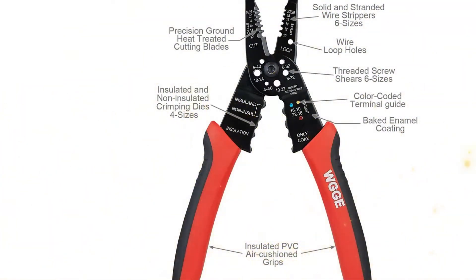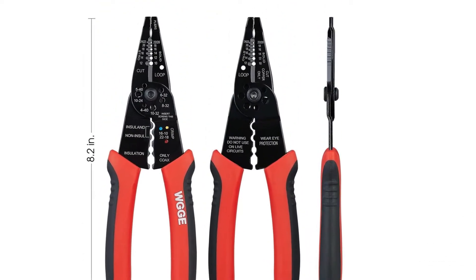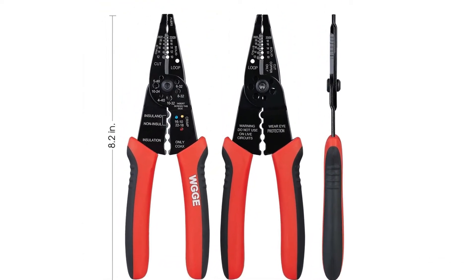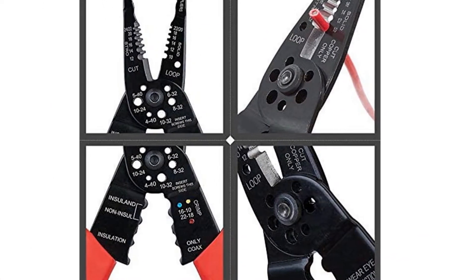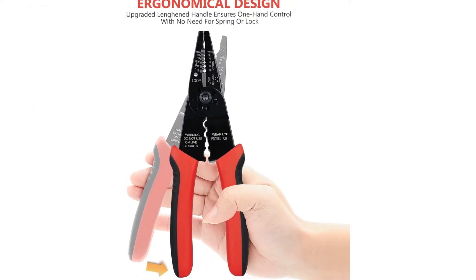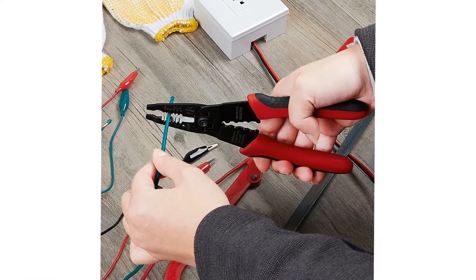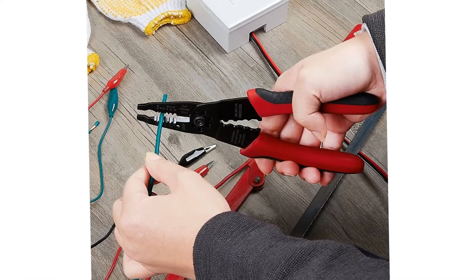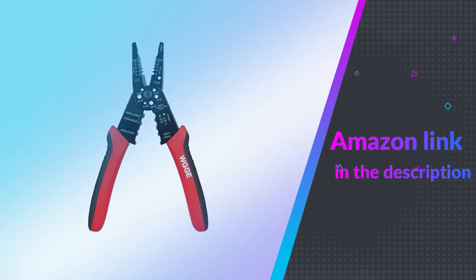Unlike conventional wire strippers, high carbon alloy steel lifetime with such accurate stripping. As an all-in-one multi-purpose tool, it can also loop wires, cut screws, crimp both insulated and uninsulated terminals. If you like this product please check out the Amazon link in the description below.